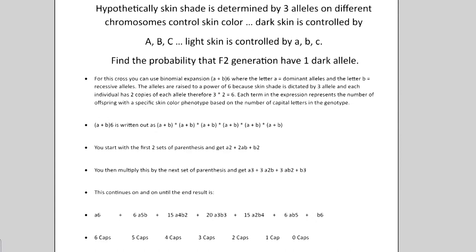Hypothetically, skin shade is determined by three alleles on different chromosomes. Dark skin is controlled by capital ABC, and light skin is lowercase ABC. Remember that these alleles have an additive effect.